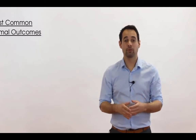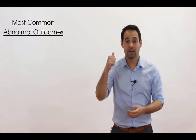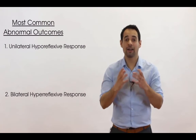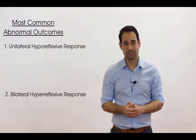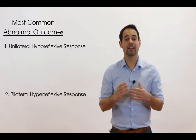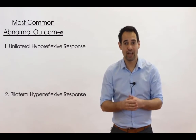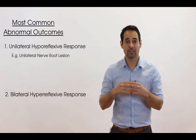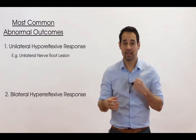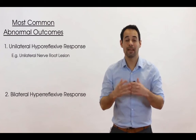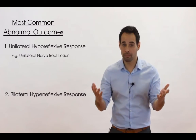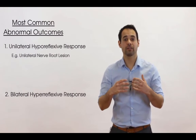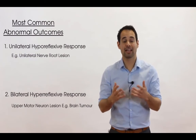With all that in mind, the two most common abnormal reflex test outcomes in musculoskeletal practice are: number one, a unilateral hyporeflexive response, or number two, a bilateral hyperreflexive response. A unilateral hyporeflexive response may occur with a nerve root lesion at a particular spinal level — for example, the patellar reflex occurs at L3/L4, so if the patient has a normal patellar reflex on the right but an absent or hyporeflexive response on the left, this may indicate a left-sided L3/L4 nerve root compression. A bilateral hyperreflexive response, as discussed, is a sign of an upper motor neuron lesion, such as a brain tumour.